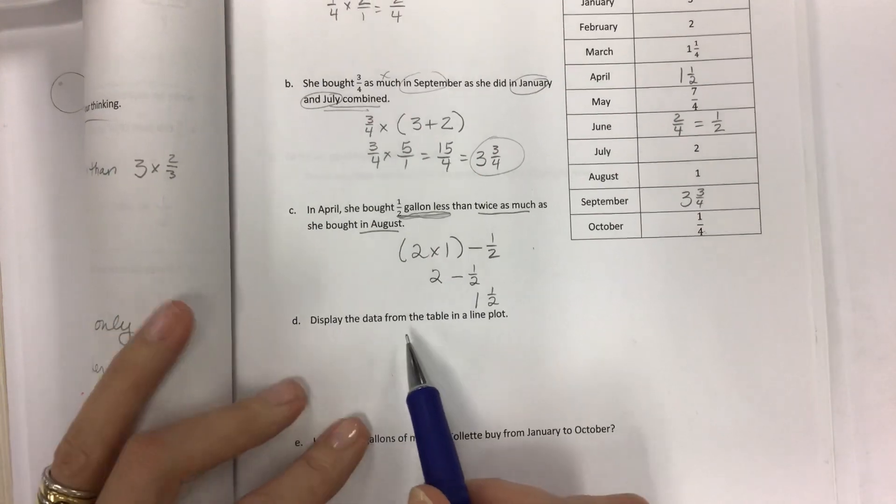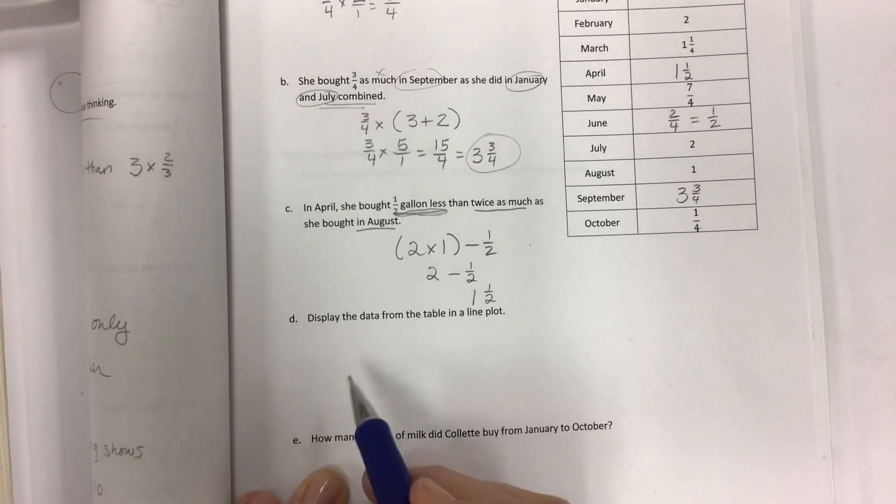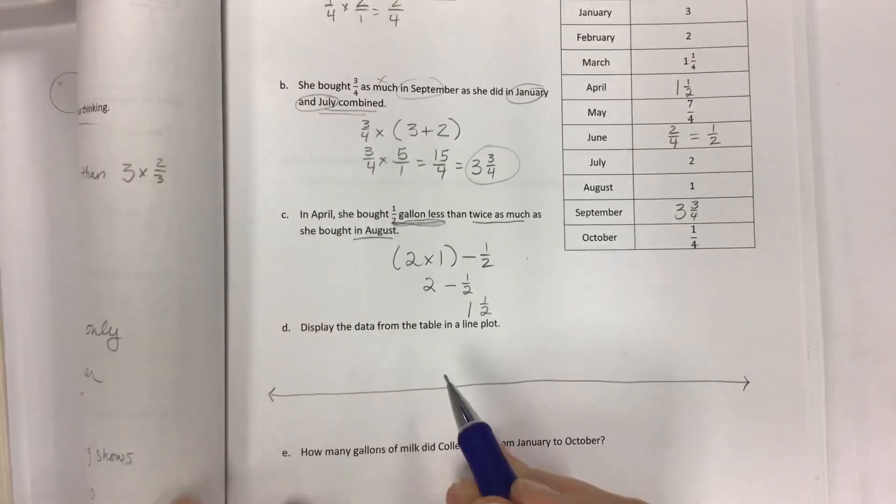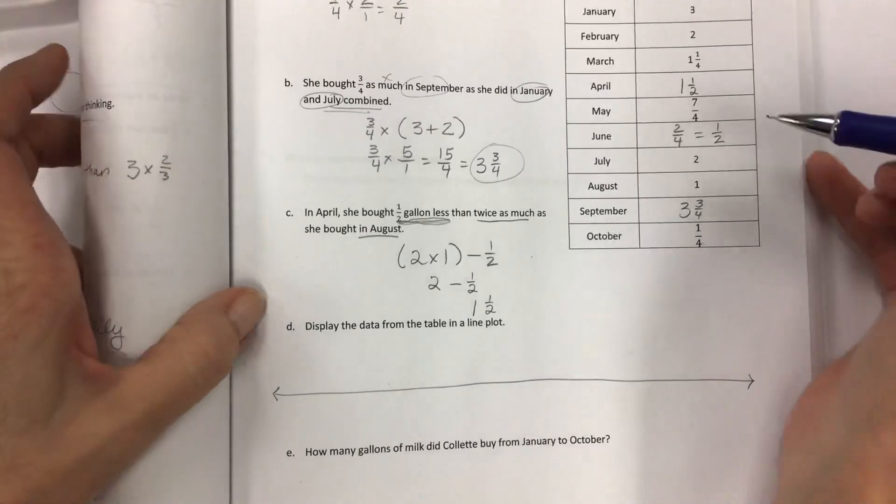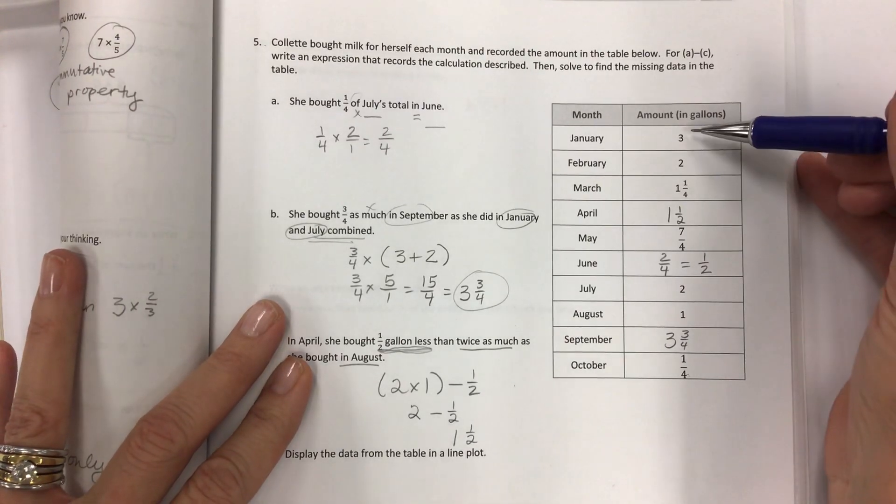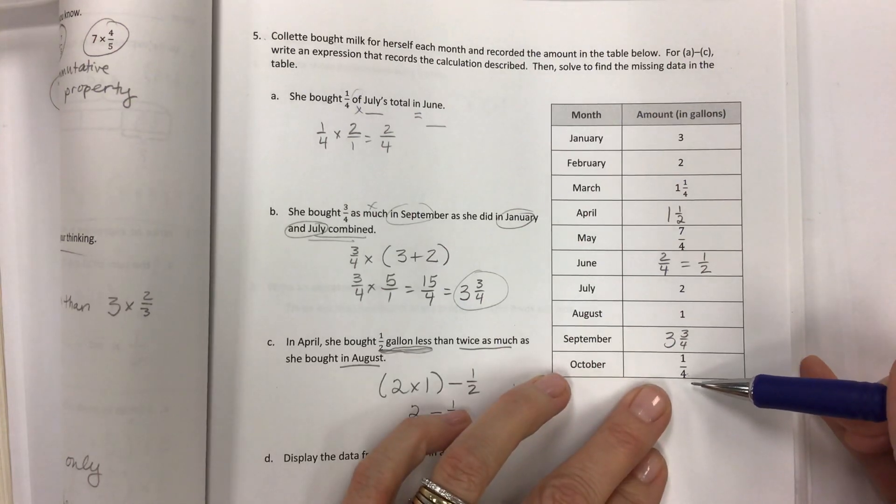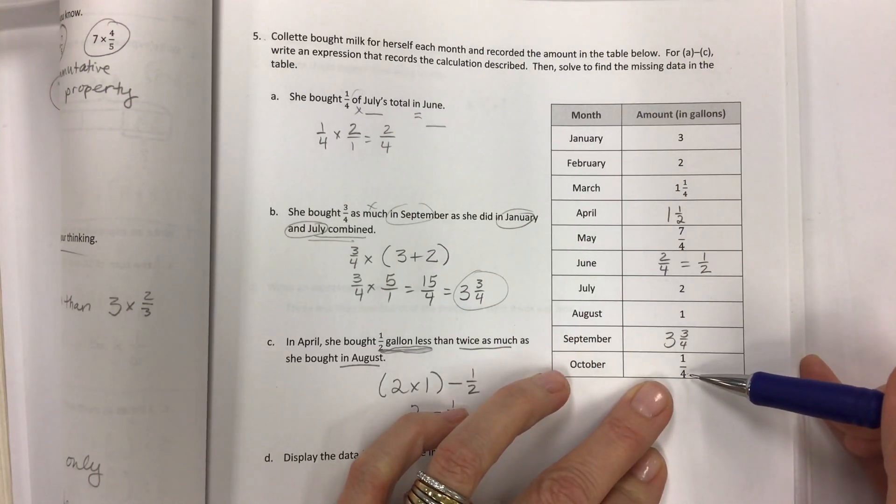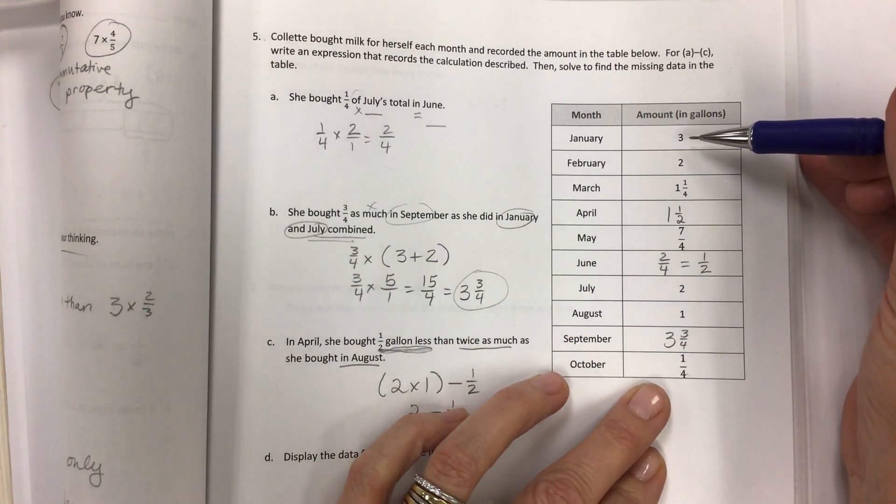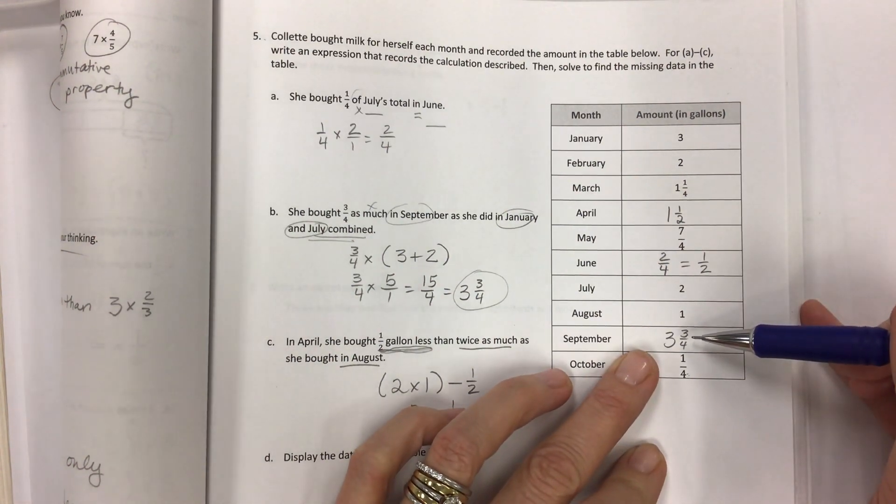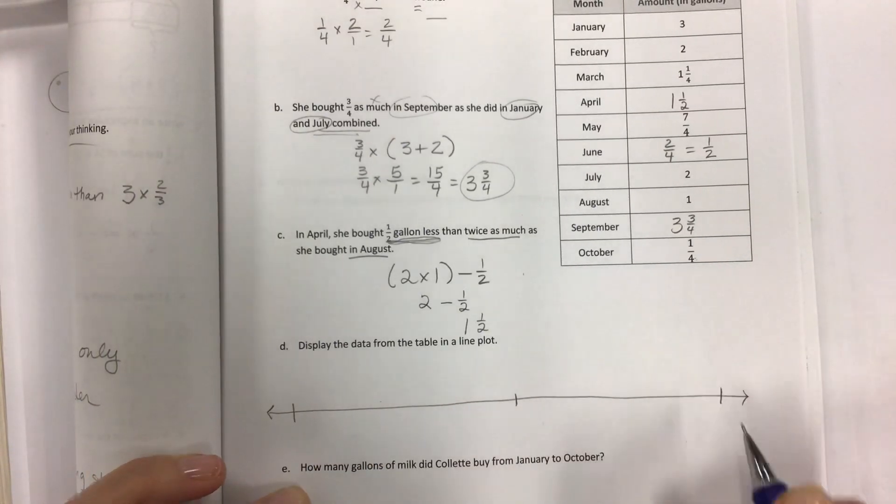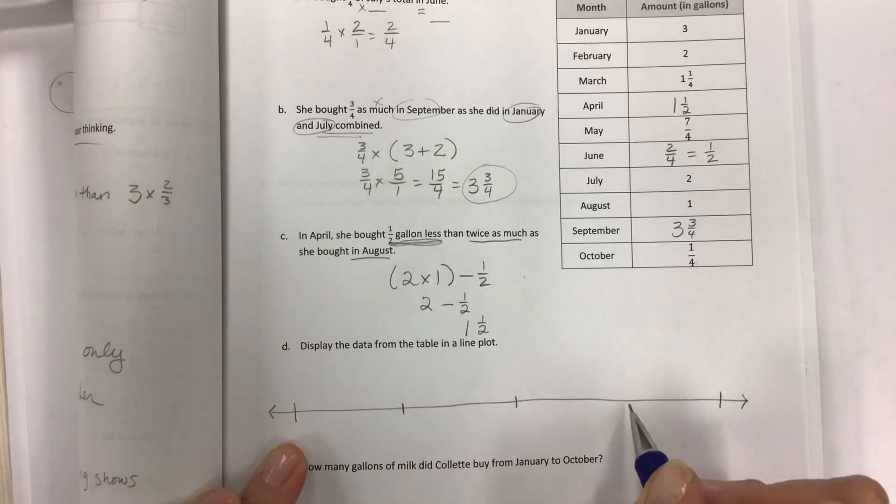Now we get to display the data from the table in a line plot. You don't have to have a ruler if you don't want it. Make a relatively straight line and look at what the data is between. What's the smallest number and what's the biggest number? I have numbers that range between zero and three and three fourths is going to be the highest, so our top number will be four. Put the two in the middle and then put your top and bottom numbers, then split each one.